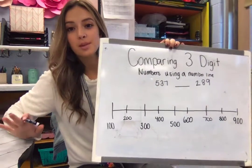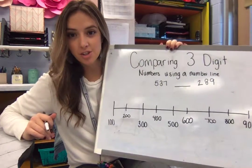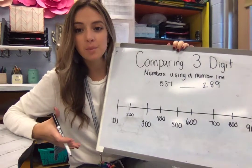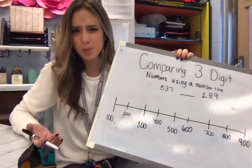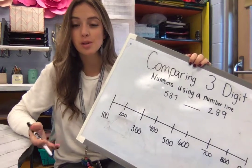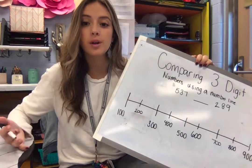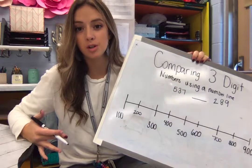Hello. Okay, so today we're going to be talking about comparing three-digit numbers, but on a number line. A lot of the times we can use number lines to help us realize which number is bigger, right? That's what I mean by comparing. We're looking at what number is bigger and what number is smaller.